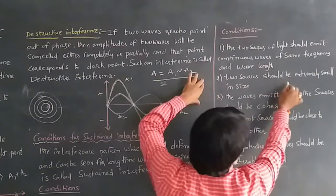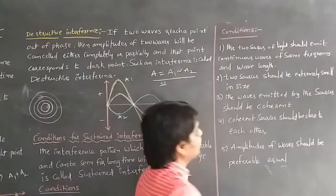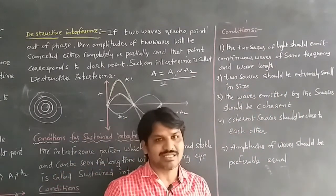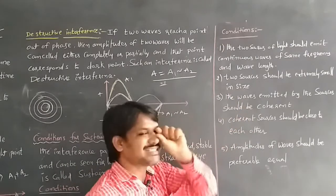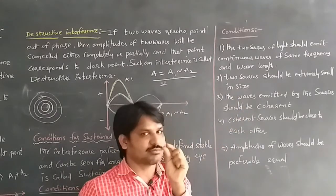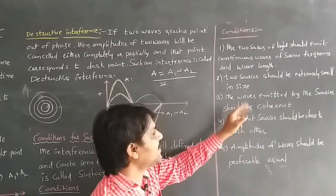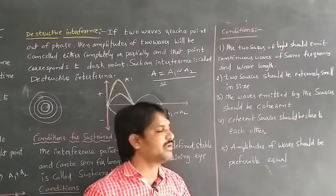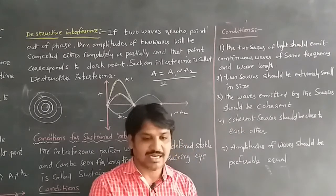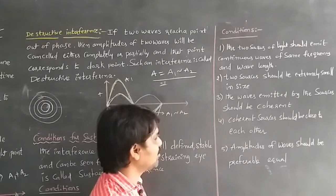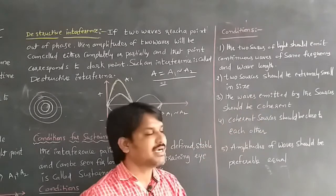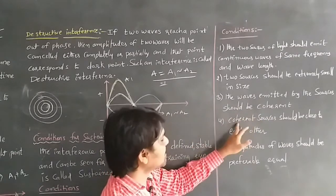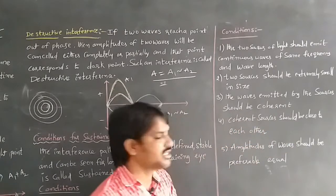Two sources should be extremely small in size — the point size of source. The waves emitted by the sources should be coherent. We will discuss about coherent later. Coherent means the phase difference will be zero. The coherent sources should be close to each other.